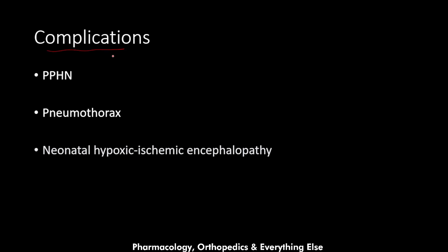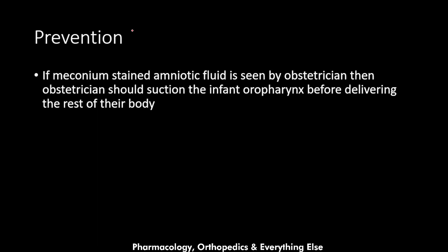The complications of meconium aspiration syndrome include persistent pulmonary hypertension, pneumothorax, and neonatal hypoxic-ischemic encephalopathy, which may lead to cerebral palsy. Regarding prevention, if meconium-stained amniotic fluid is seen by the obstetrician, the infant's oropharynx should be suctioned before delivering the rest of the body — so once the fetal head is delivered and meconium-stained fluid is observed, oropharyngeal suctioning is performed before completing the delivery.